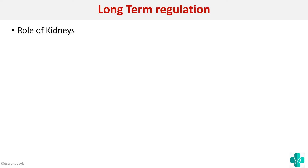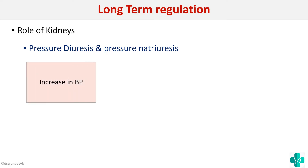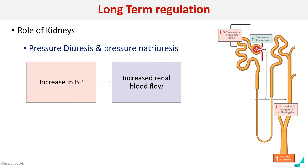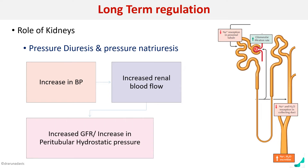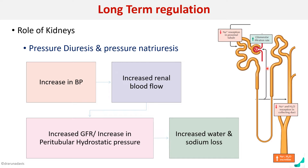The first mechanism by which kidneys regulate blood pressure is called pressure diuresis and pressure natriuresis. Suppose there's an increase in BP — there will obviously be an increase in renal blood flow, so the blood reaching the nephron will also increase. That is, there will be an increased GFR and an increased peritubular hydrostatic pressure.